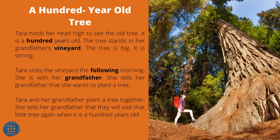A Hundred-Year-Old Tree. Tara holds her head high to see the old tree — it is a hundred years old. The tree stands in her grandfather's vineyard. It is big and strong. Tara visits the vineyard the following morning with her grandfather. She tells him she wants to plant a tree. They plant a tree together. She says they will visit that little tree again when it is a hundred years old.